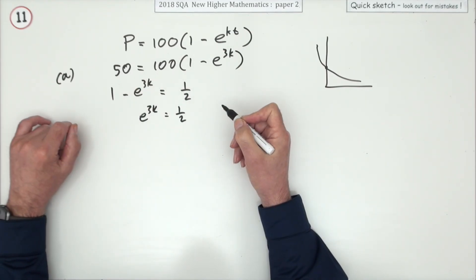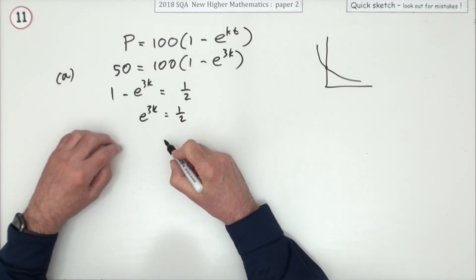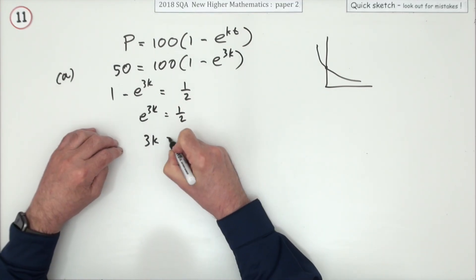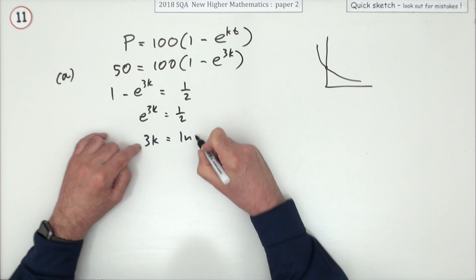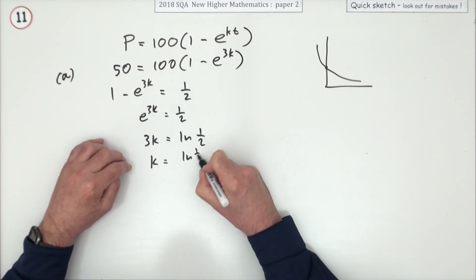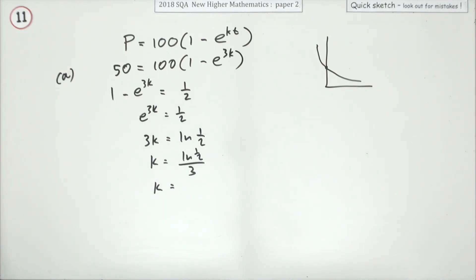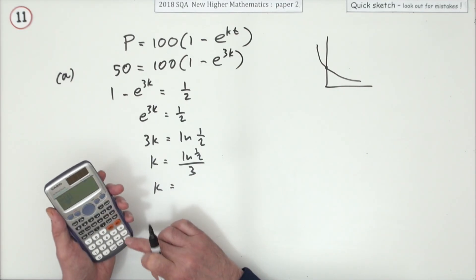Now you can use logs, put ln on both sides if you like. I'm just going to use the inverse immediately to say 3k is ln of a half. So k is going to be ln of a half divided by 3, and then I'm just going to press the buttons.